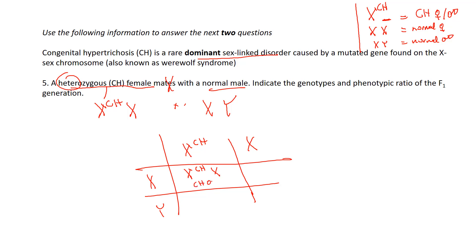So that's going to be a CH female. X X is a normal female. And X with a CH and a Y is going to be a CH male. And X Y is going to be a normal male. So same thing, we get a 1 to 1 to 1 to 1 ratio. One being a CH female, one being a normal female, one being a CH male, and one being a normal male.